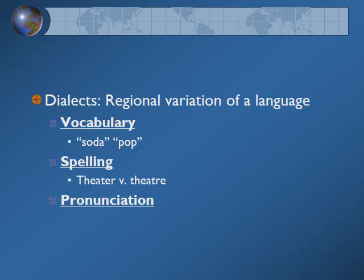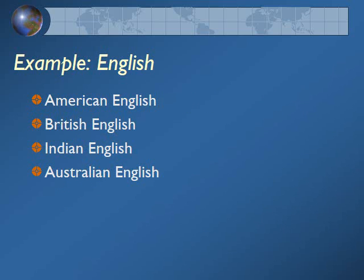Within languages themselves, you have different dialects — still speaking the same individual language, but with some variations. It could be variations in vocabulary: one of the best examples in the United States is 'soda' versus 'pop,' where different parts of the country use different words, but everyone is still speaking English. Spelling might differ too — in England you may see 'theatre' spelled T-R-E at the end, while in the United States it's T-E-R. And then there's pronunciation, which is where you get accents. English has many dialects: American English, British English, Indian English, Australian English, Canadian English — you'll still be speaking the language, but there may be variation in vocabulary, spelling, or pronunciation.